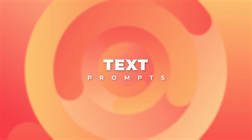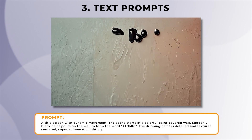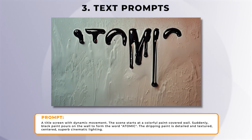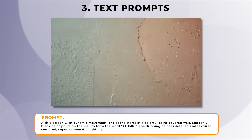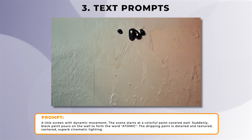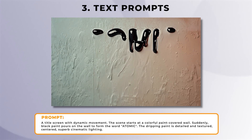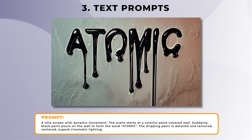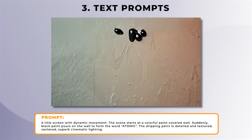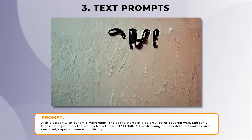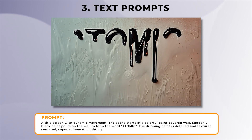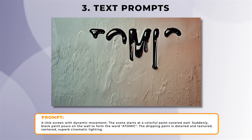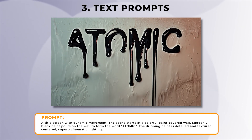Now let's have a look at text prompts. As you can see from this video, I used the prompt of a title screen with dynamic movement. The scene starts at a colourful paint-covered wall. Suddenly, black paint pulls onto the wall to form the word 'atomic'. The dripping paint is detailed and textured, centered, with superb cinematic lighting. It was quite a detailed prompt I used, and I usually put the word I want spelled in inverted commas in the prompt so it knows what word to use. I think it did a pretty good job — it looks pretty realistic. I wish the video was a bit longer, because the word 'atomic' only just shows right at the end.